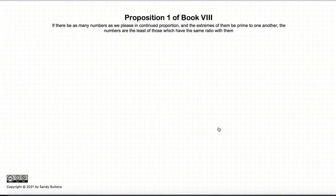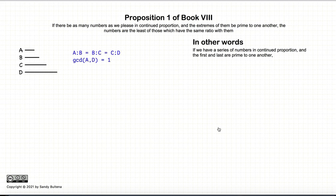This video presentation will be on Proposition 1 of Book 8, and in this proposition we're starting with a series of numbers that are in continuous proportion. In this particular example we're using four numbers: A, B, C, and D, where the ratio of A to B is equal to the ratio of B to C, which is equal to the ratio of C to D. That is what is meant by continuous proportion.